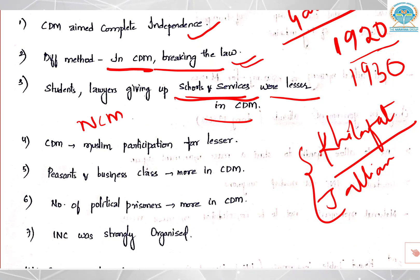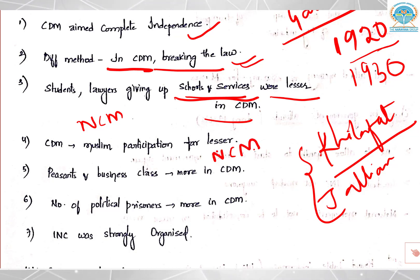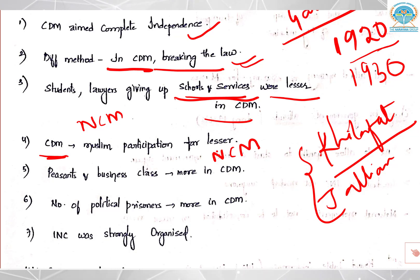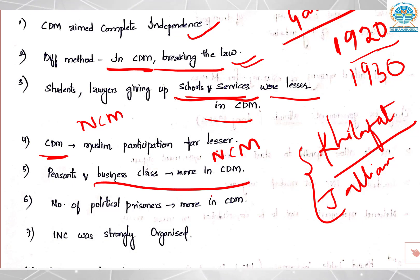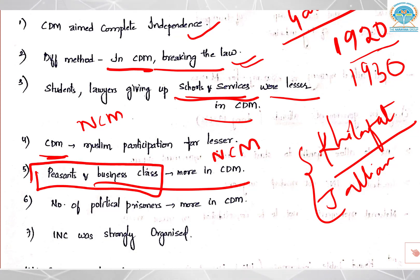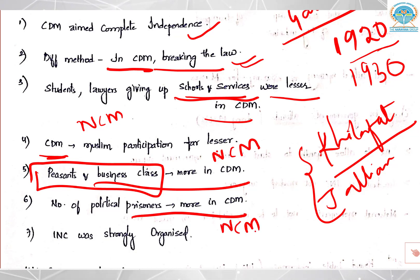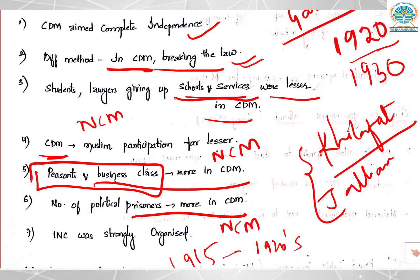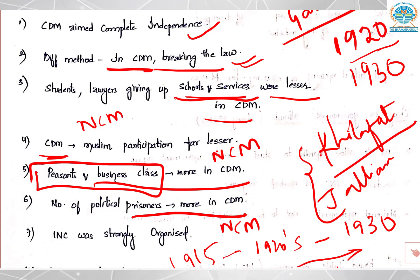In civil disobedience, Muslim participation was far lesser compared to non-cooperation, because in non-cooperation there was the Khilafat issue which brought many Muslims together. But in civil disobedience there was no such reason, so only people who were pro-India participated. However, peasants and the business class participated more in civil disobedience than in non-cooperation. The number of political prisoners was also more in civil disobedience, because by the 1930s Gandhi had influenced more and more people as movements progressed since his arrival in India around 1915.